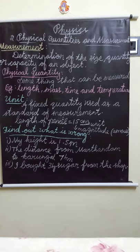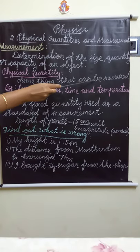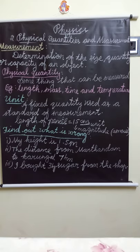Without measurement, we cannot measure the physical quantities. Next is physical quantities. What is the meaning of physical quantity? Something that can be measured — anything, for example: books, pencil, eraser, scale, table, chair, anything.